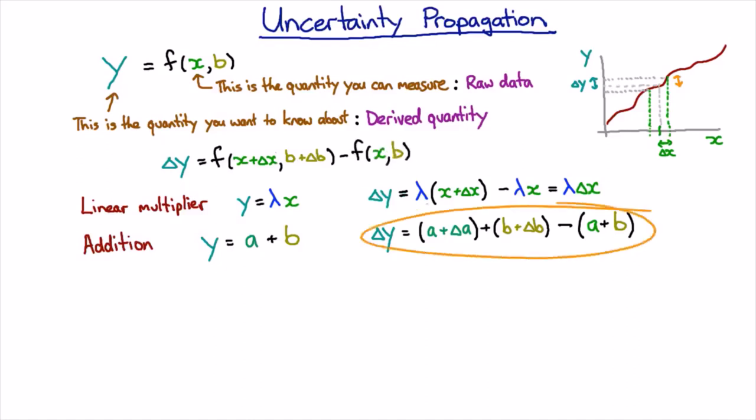So what we've done down here is we've said it's just addition, so I'm going to have a going to a plus delta a and we're going to have b going to b plus delta b. And we're just taking away our average there.